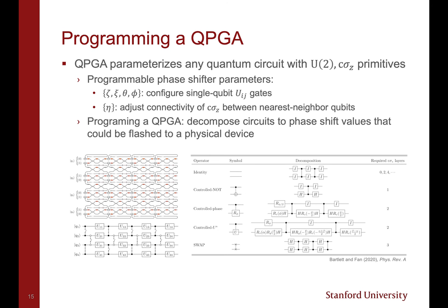Now that we have described how this physical architecture emulates a logical quantum circuit, we would like to know how to program the device. The architecture we described parameterizes any quantum circuit using U(2) and controlled-Z primitives. The programmable parameters here are ζ, ξ, θ, and φ for each cell, which configure the single qubit gates,